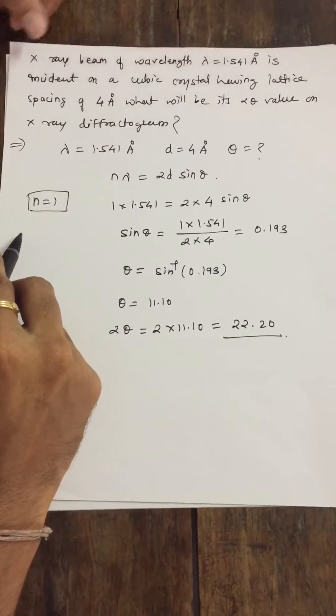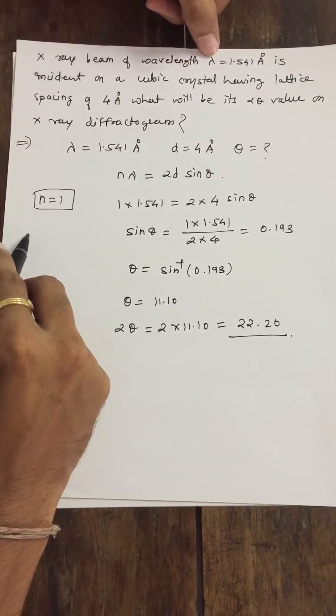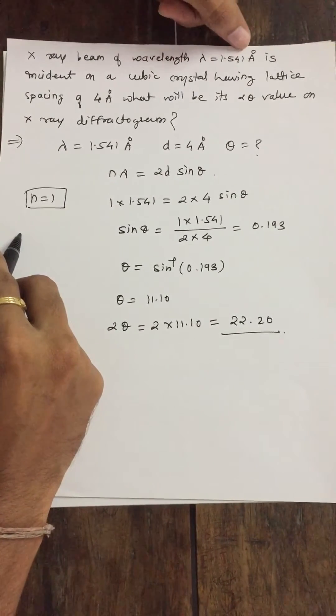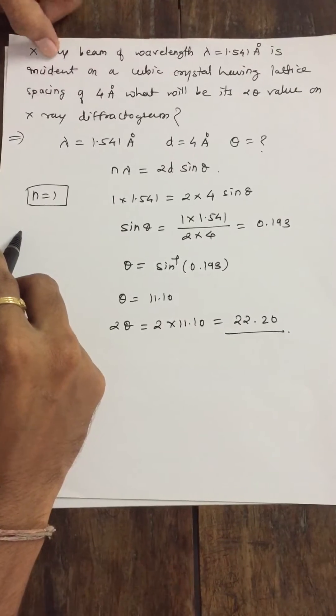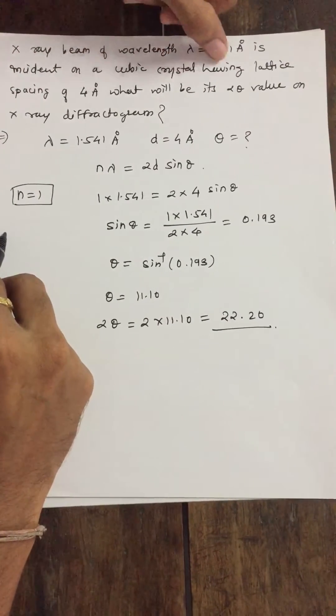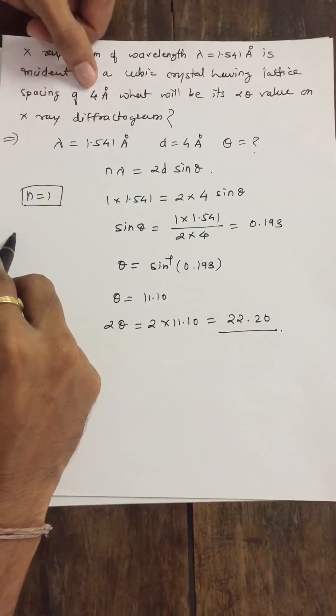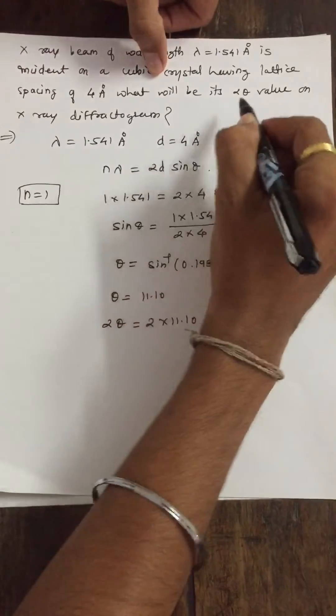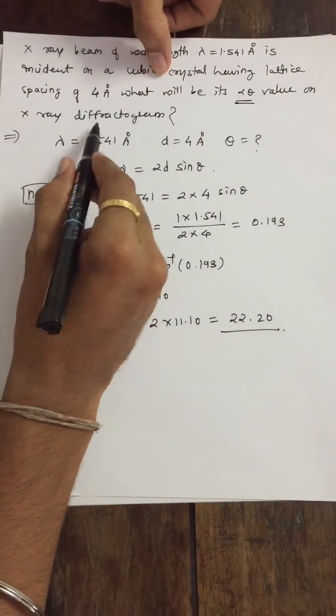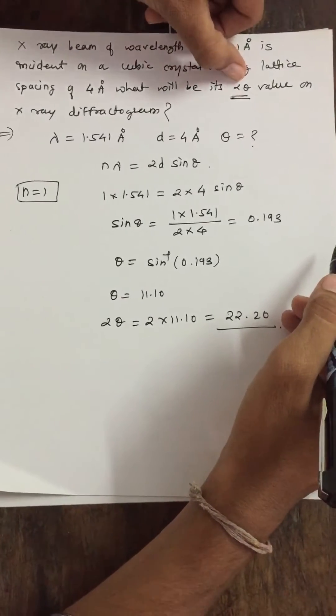The given question is: X-ray beam of wavelength lambda equals 1.541 Angstrom is incident on a cubic crystal having lattice spacing of 4 Angstrom. What will be its 2 theta value on X-ray diffractogram? So, we have to calculate the value of 2 theta.